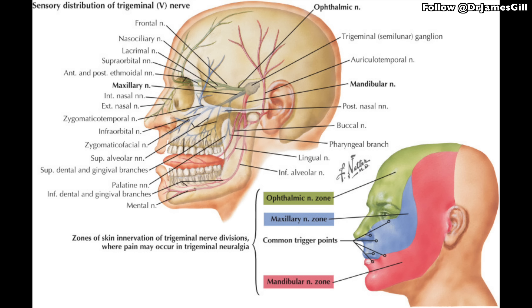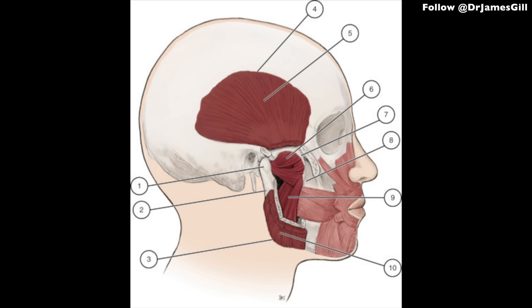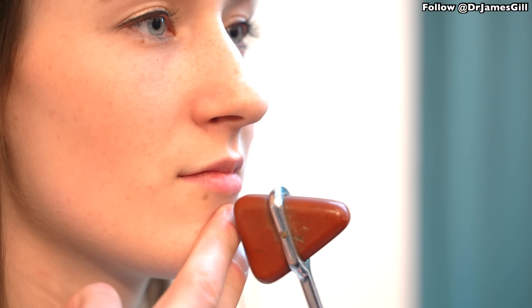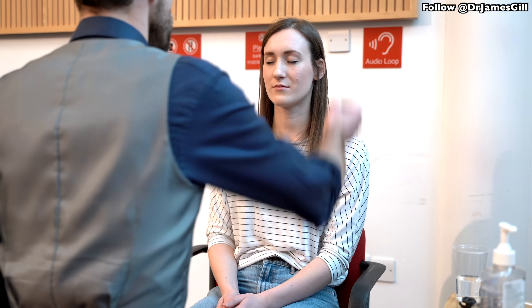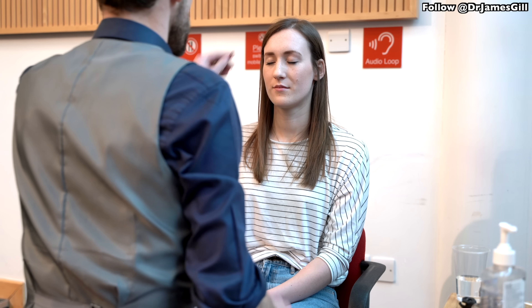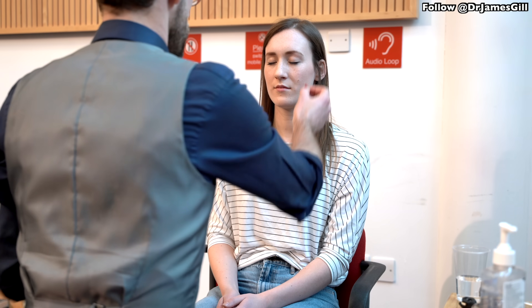Cranial nerve 5, the trigeminal nerve, is responsible for facial sensation, the corneal reflex (blinking when something touches the eye), the muscles of mastication used for chewing, and the jaw jerk reflex. Abnormalities may include impaired sensation in one area of the face or weakness in chewing if there is a lesion affecting the trigeminal nerve.